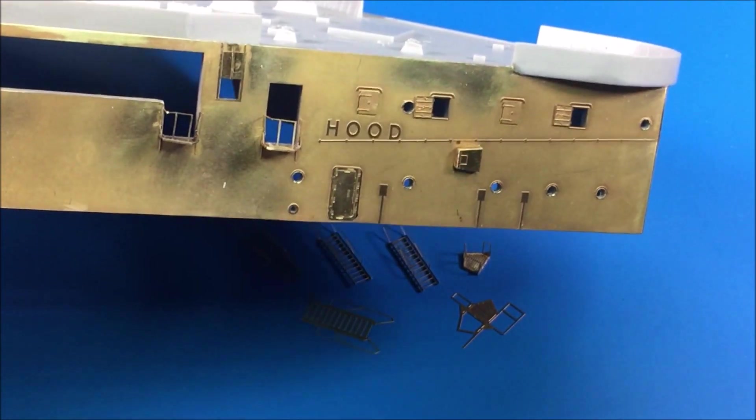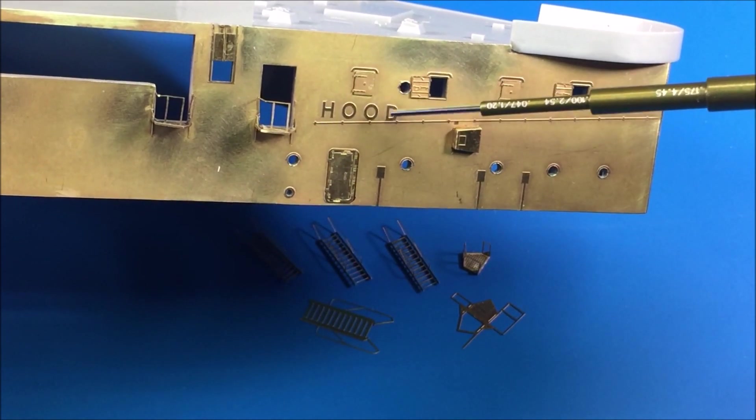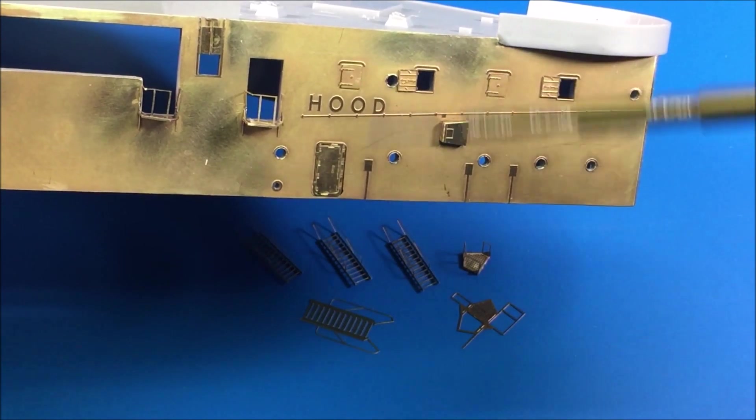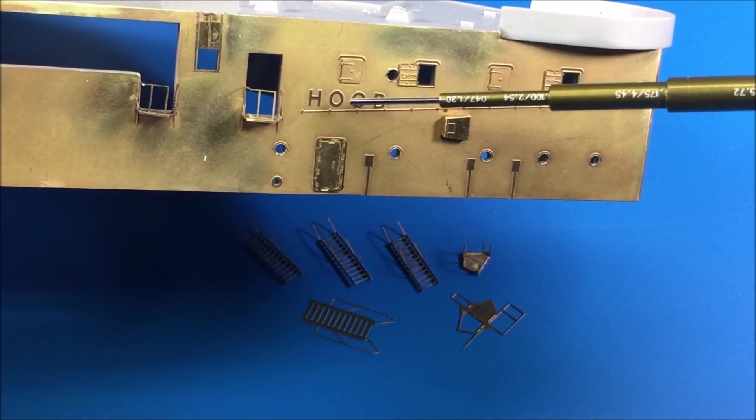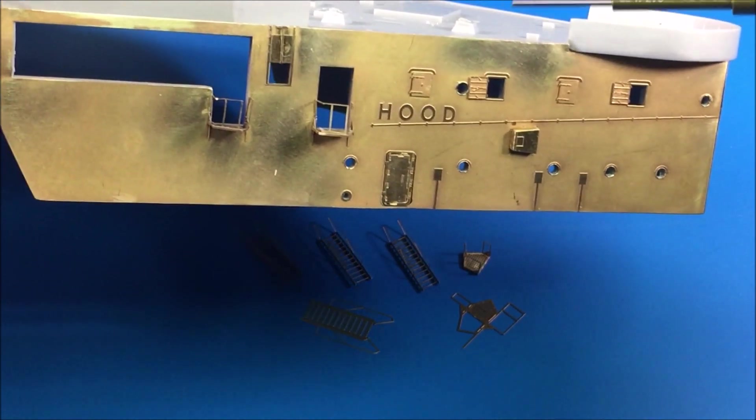The reason for photo etch, if you don't know, is just to enhance certain details. Like on the side of the ship here, the hood - the plastic was pretty good overall, it's just some of the little details were a little more big.